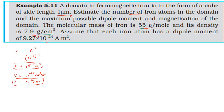The density is 7.9 grams per centimeter cube. Density equals mass divided by volume, so mass equals density times volume. The volume is 10⁻¹² centimeter cubed, and the centimeter cube units cancel, giving a mass of 7.9 × 10⁻¹² grams for this domain.